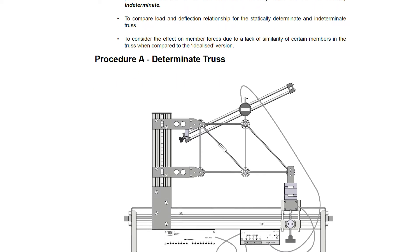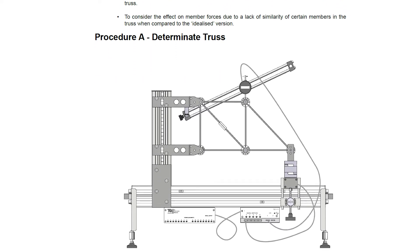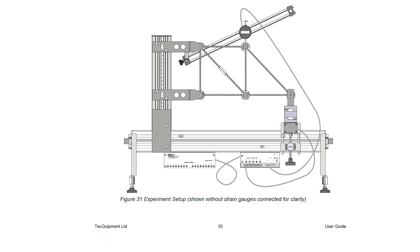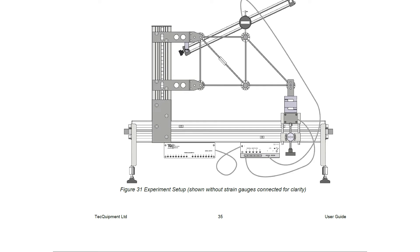Determinate, i.e. when there is no redundant truss to share the load. Indeterminate, i.e. includes the use of additional members to share the load and add redundancy against failure.